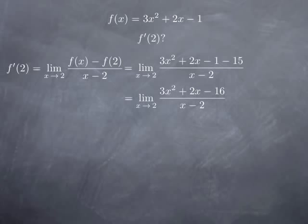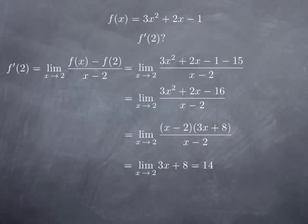Indeed, at the top we have 3 times 4 is 12, plus 4 is 16, minus 16 is zero. This is expected because this is nothing but f of x minus f of 2, which is 0 when x is 2. Since this polynomial is 0 at x=2, we can factor out x minus 2, giving us 3x plus 8 as the second factor. After canceling the common factor x minus 2, we get the limit as x approaches 2 of 3x plus 8, which is just a polynomial, so we plug in x=2 and obtain 6 plus 8 equals 14. In other words, f prime of 2 is 14.